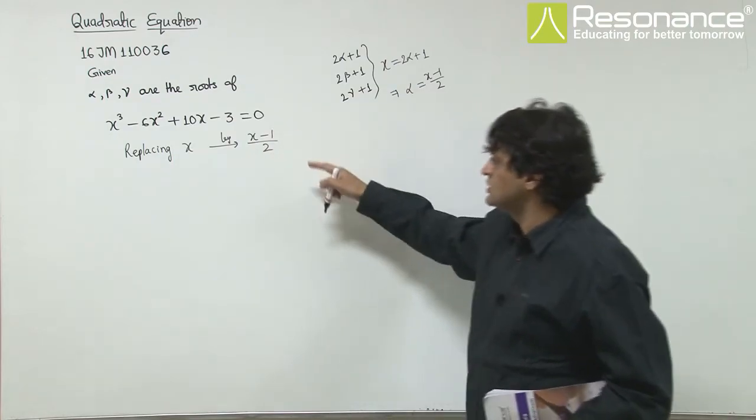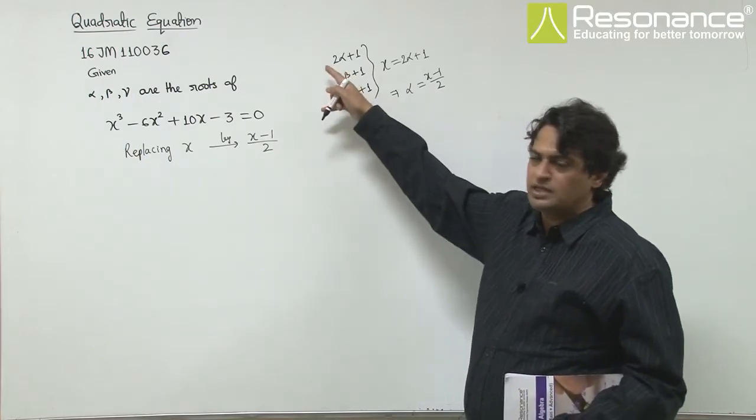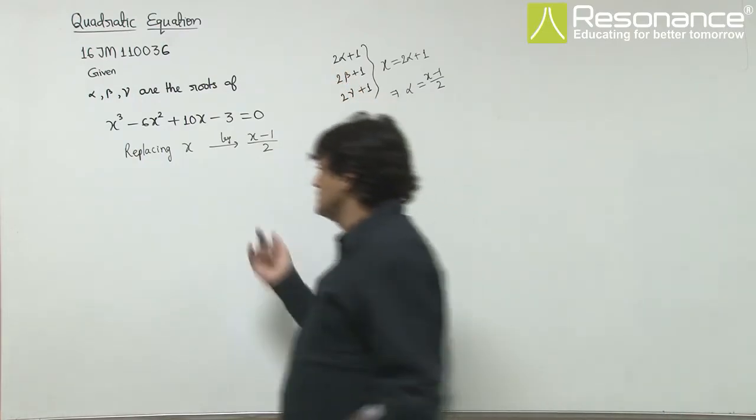That means x minus 1 by 2, if you replace, that equation will be satisfied by 2α+1, 2β+1, 2γ+1.